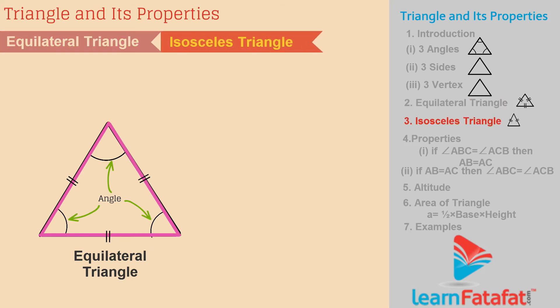Isosceles triangle. If two sides of a triangle are equal or if two angles of a triangle are equal, then the triangle is called isosceles triangle.